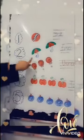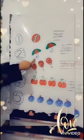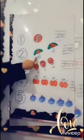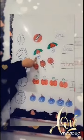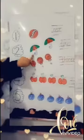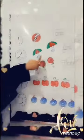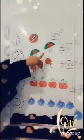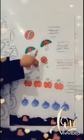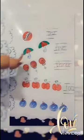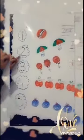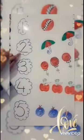Now these are umbrellas. Count — how many umbrellas are here? One, two. How many umbrellas are here? Two. This is number two.